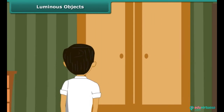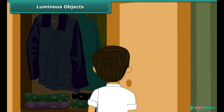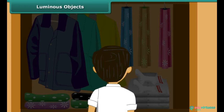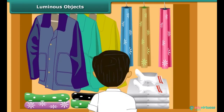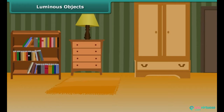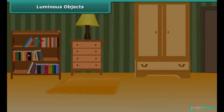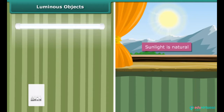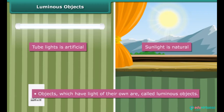You are getting late for school and you are not able to find your socks. You search for them in the cupboard. Since the cupboard is dark, you switch the tube lights on. Once you locate the socks, you switch the lights off because there is sufficient daylight. We just talked about two types of light — the light from the tube lights and daylight, which is the light from the sun. While sunlight is natural, light from the tube lights is artificial. Objects which have light of their own are called luminous objects. Both the sun and tube lights are luminous objects.